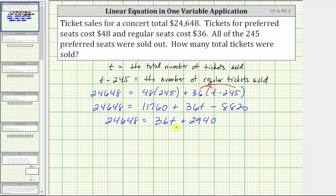The next step is to add or subtract to isolate the variable term. To isolate 36t, we need to undo plus 2,940 by subtracting 2,940 on both sides of the equation. Simplifying, 24,648 minus 2,940 is equal to 21,708. This is equal to, on the right side, this difference is zero, we just have 36t.